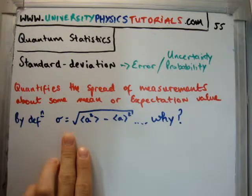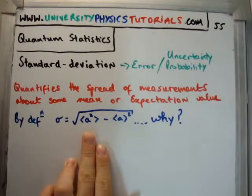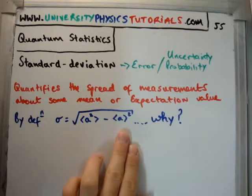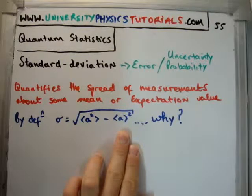And it's given as follows. It's the square root of your value squared, the average of your value squared, minus the square of your average. Alright?